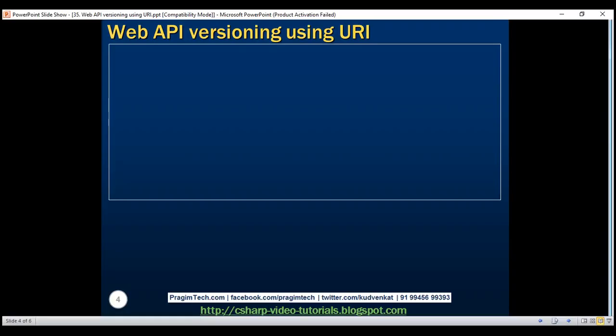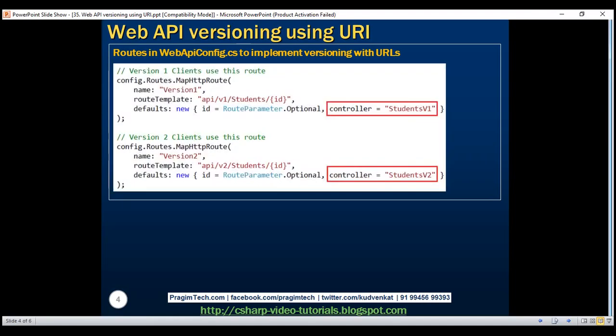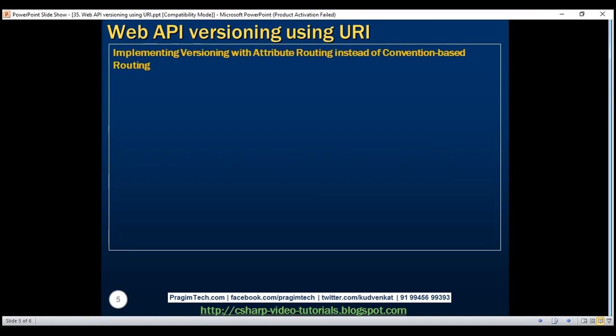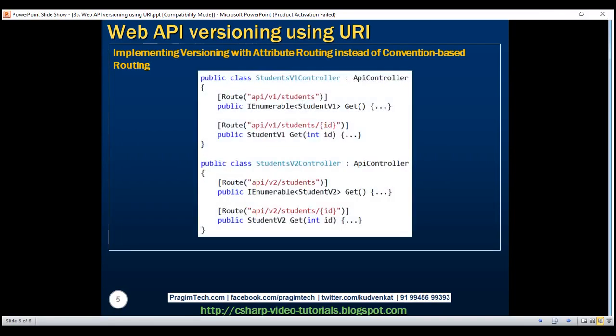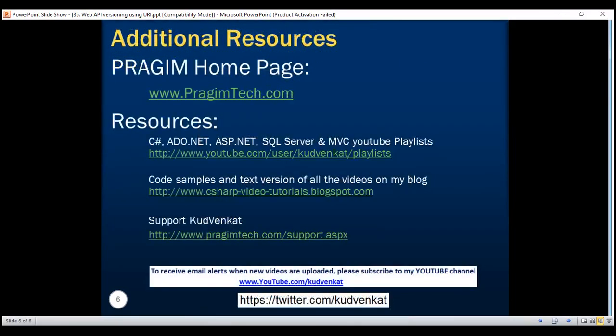So here is our first example: implementing versioning using convention-based routing — these are the two routes in WebApiConfig.cs. And here is our second example: implementing versioning with attribute routing instead of convention-based routing. Thank you for listening and have a great day.